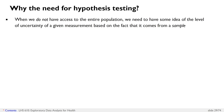When we do not have access to the entire population, we need to have some idea of the level of uncertainty of a given measurement, based on the fact that it comes from a sample — and hopefully a random sample, not a purposeful sample, which can make it biased in some way.